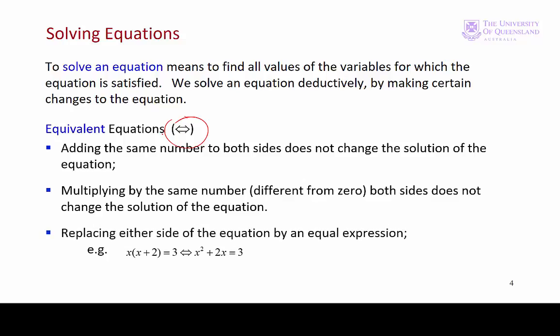And thirdly, if we replace one side of the equation by an equal expression, we end up with an equivalent equation. So here on the left hand side, we go from x times (x + 2) to x² + 2x. They're equal expressions. So these two equations are logically equivalent and will have the same solution. If we carry out any of these three operations or combinations of these operations, we'll end up with equivalent equations that have the same solution to the original equation.